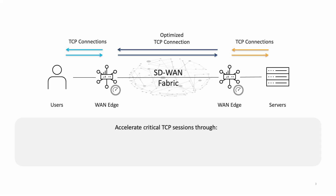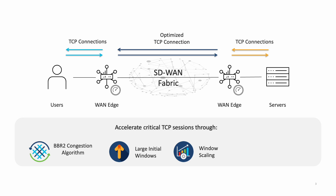TCP optimization uses the BBR2 algorithm, which provides improvements on variable latency links and queued links, using techniques like large initial windows, window scaling, and selective acknowledgment.